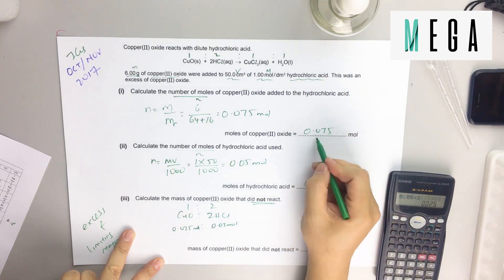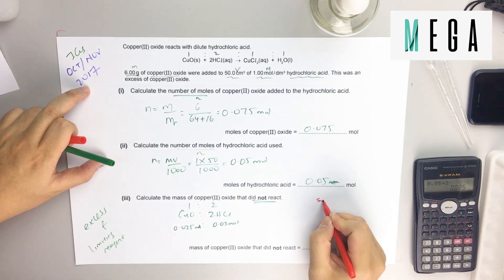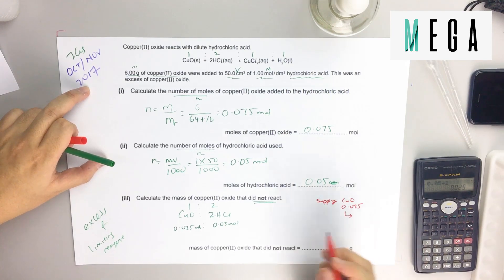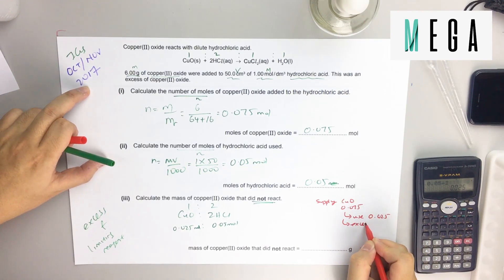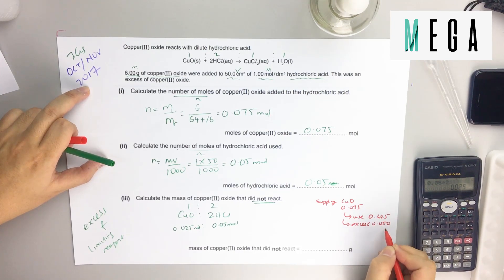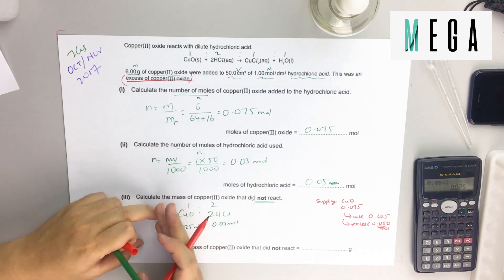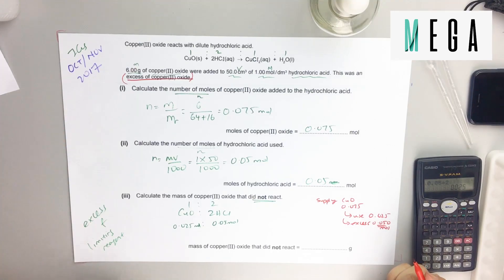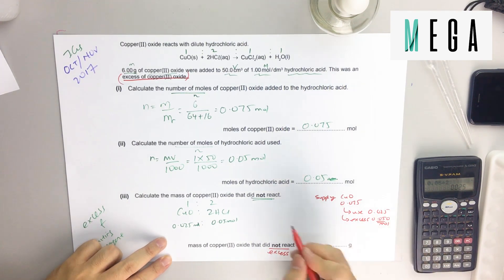We can see we supplied 0.075 mol of CuO but only used 0.025 mol. So the excess CuO = 0.075 − 0.025 = 0.050 mol. The question also mentioned that CuO was in excess. The excess is what did not react — we always use the limiting reagent for further calculations and identify the excess as what remains.